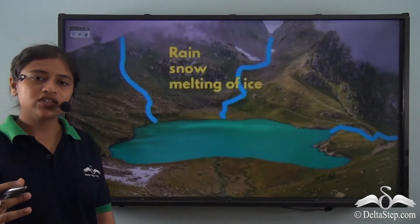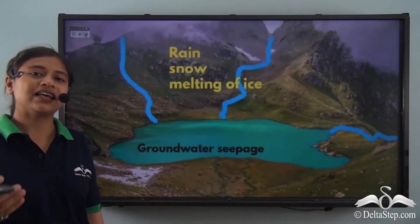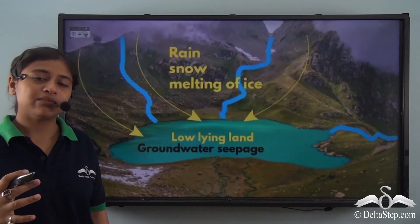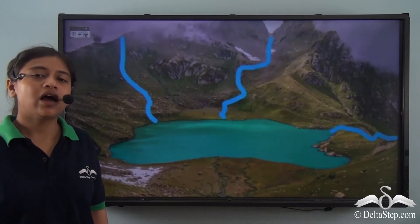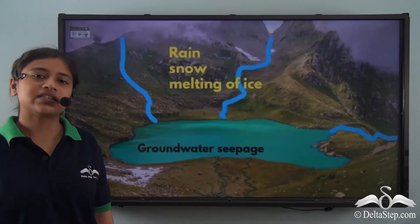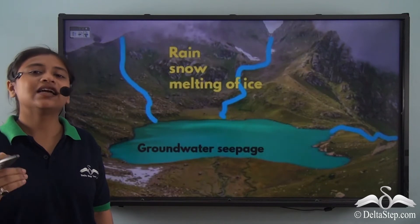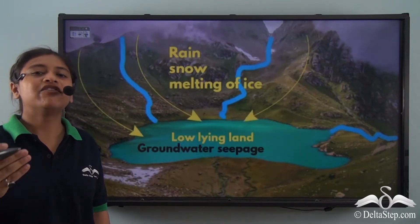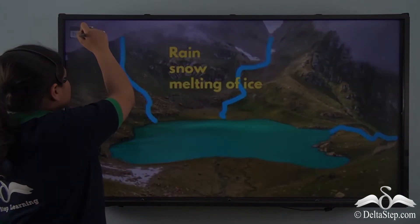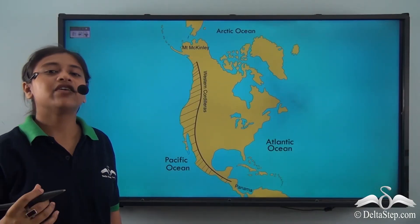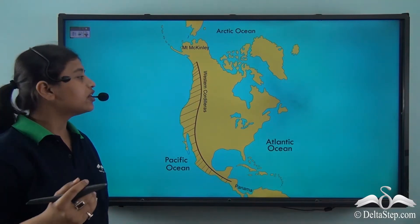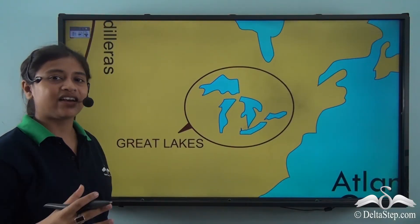The northern part of the continent has many basins or lakes. This is mainly because in earlier times the northern part was entirely covered by thick ice sheets or glaciers, which when they receded or melted led to the formation of various basins that are now either swamps or lakes. Due to this we have a very important physical feature in North America — the Great Lakes.